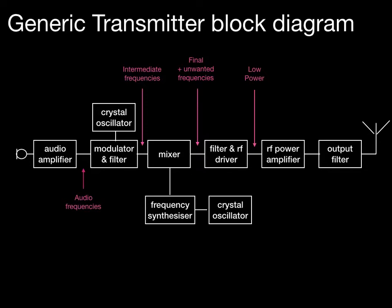Because the mixer gives us the final frequencies and potentially some unwanted frequencies — which differ depending on whether the modulation scheme is AM or FM — we'll want to pick off the ones we want. They then go into the filter and RF driver, where only the desired frequencies are selected and the level is increased enough to drive the RF power amplifier.